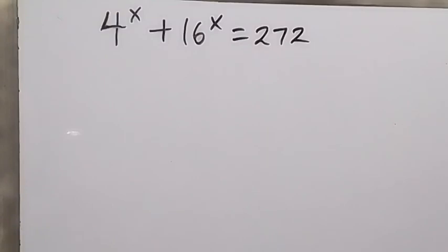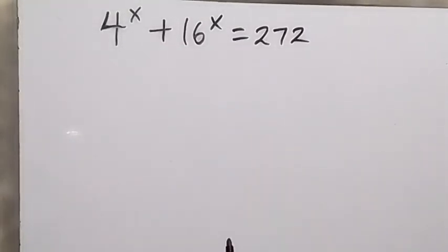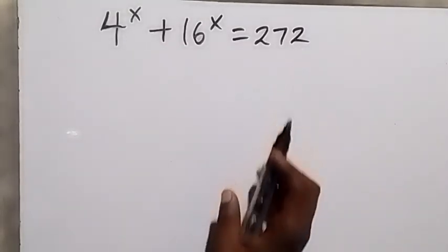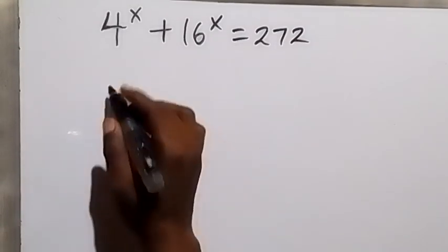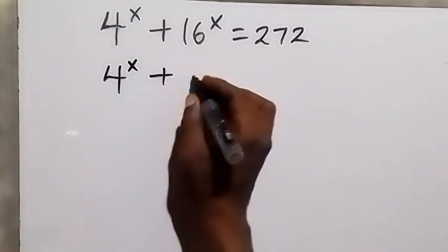Hello, you are welcome. How to solve this problem: 4 raised to power x plus 16 raised to power x equals 272. From here we can write this again as 4 raised to power x plus 4